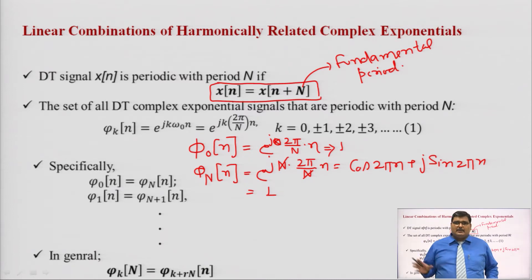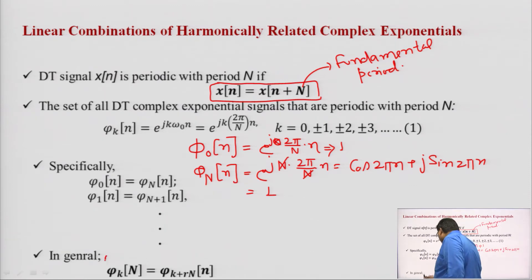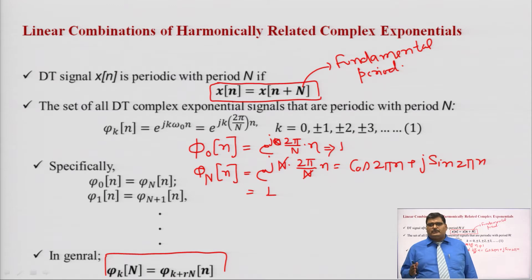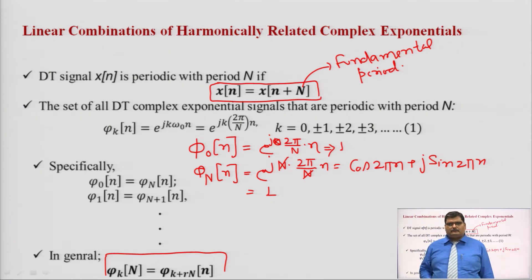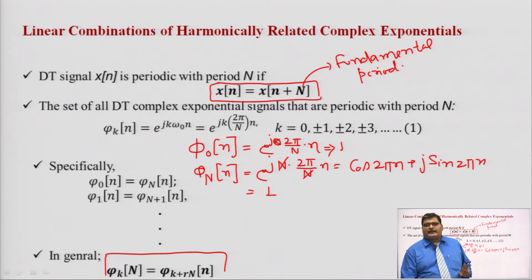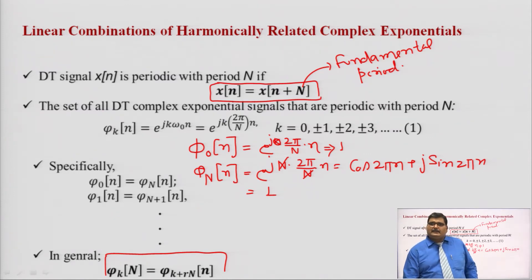To write this in generalized form, we can write φk(n) = φ_{k+r·N}(n), where r takes values 0, 1, 2, 3, 4, 5. This is the first key information: if you have a discrete time complex exponential signal with periodicity N, then φk(n) repeats with period N in k.